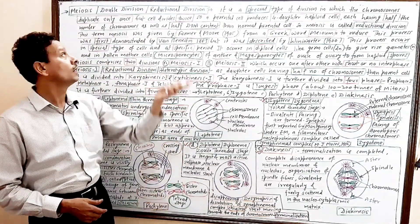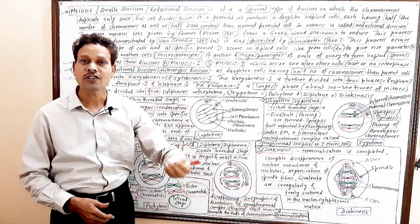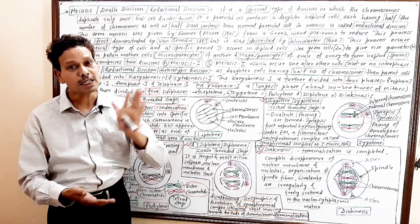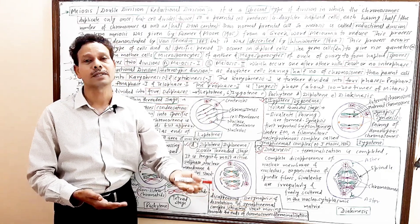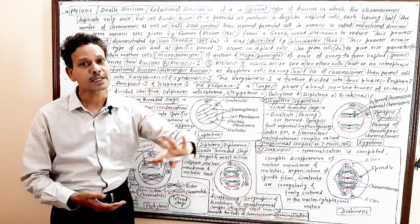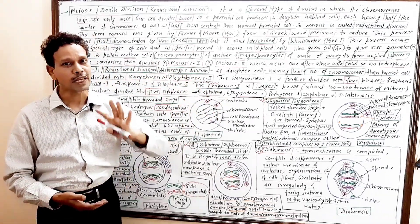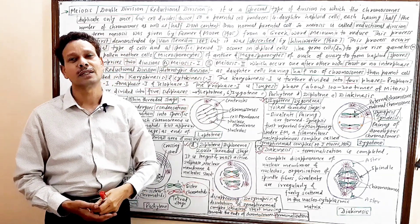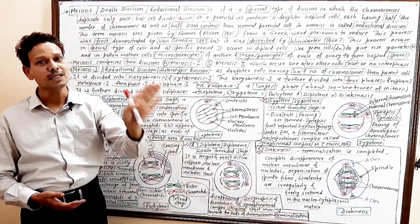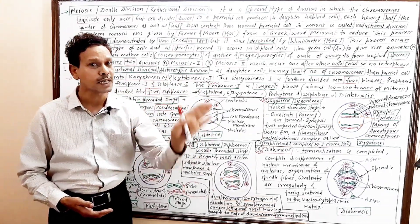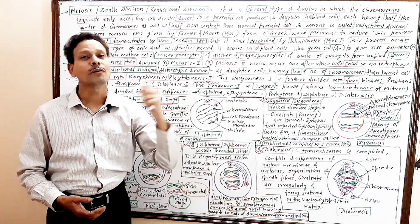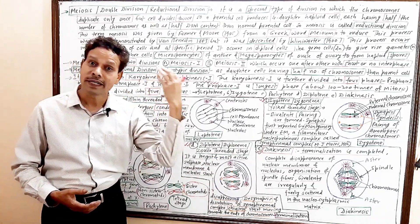Meiosis is a special division — it is a double division. It is a special type of cell division because in the parent cell, chromosomes replicate once, but the parent cell divides twice. As a result, the parent cell gives rise to four daughter cells, and these daughter cells are haploid, each having half the number of chromosomes and half the DNA content.